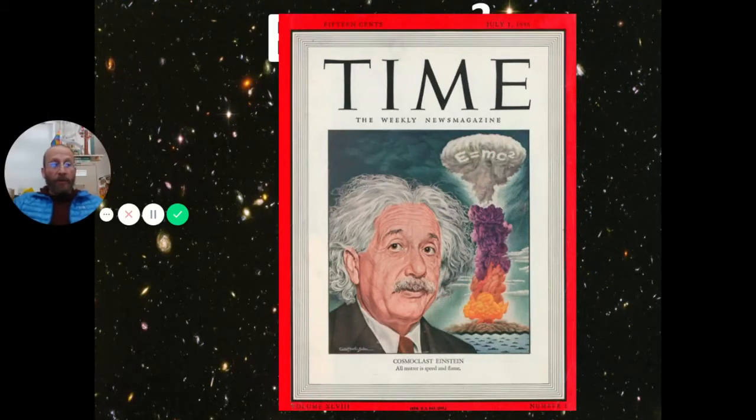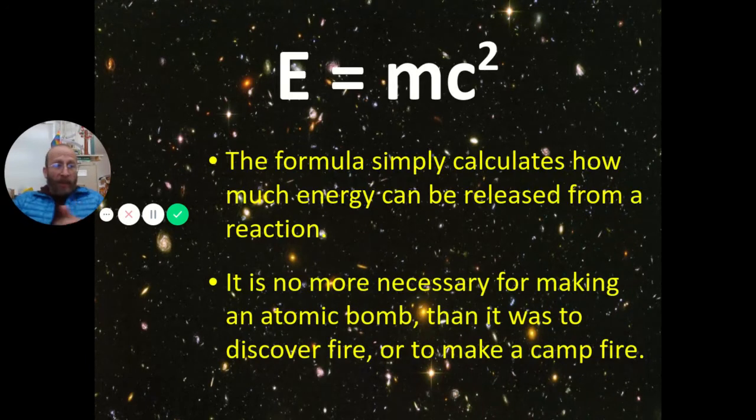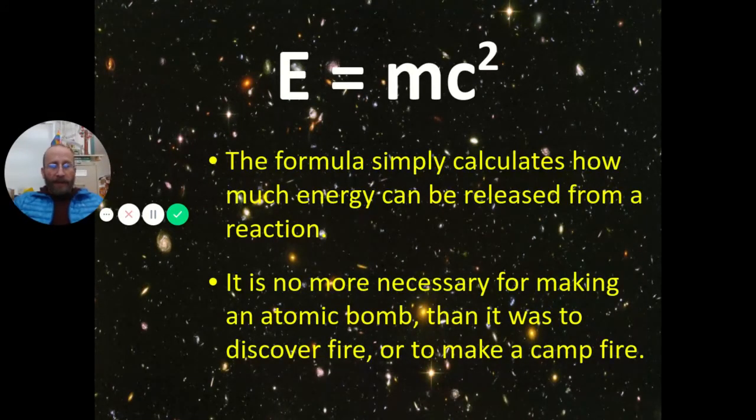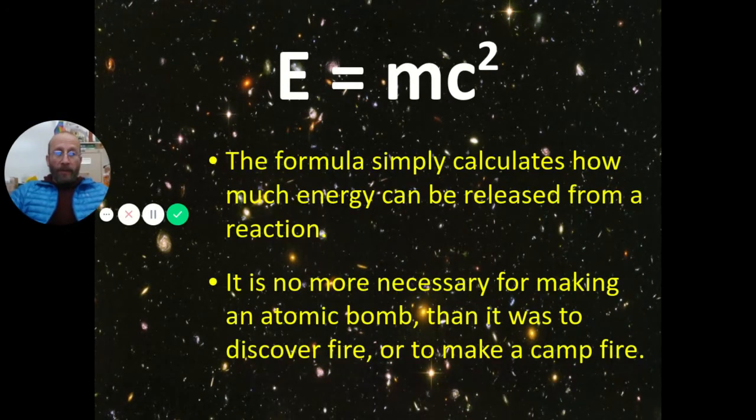He just feels that the science outpaced our morality. And we shouldn't have weapons that can cause so much destruction. So it made him sad that the bomb was built. But actually, it wasn't based on his work. So what E equals MC squared does is give us an ability to calculate how much energy came out of the explosion. Of course, we can use that formula to find out how much energy comes out of any reaction, including maybe burning a candle or lighting a campfire. However, you don't need to understand physics or that formula in order to make a fire, or to have discovered fire, right? So the building of the bomb didn't need his work, although FDR needed his encouragement. In that case, he is, in fact, involved in creating our nuclear age.